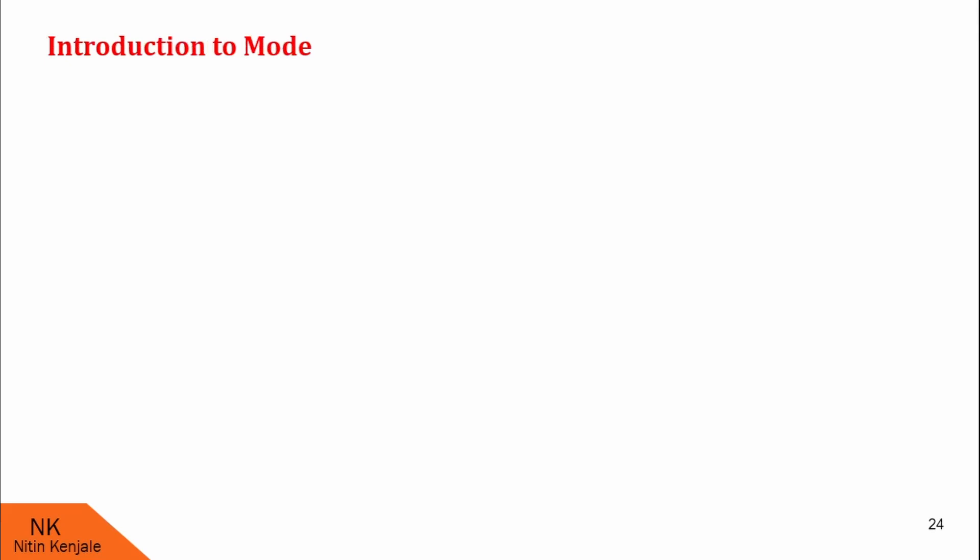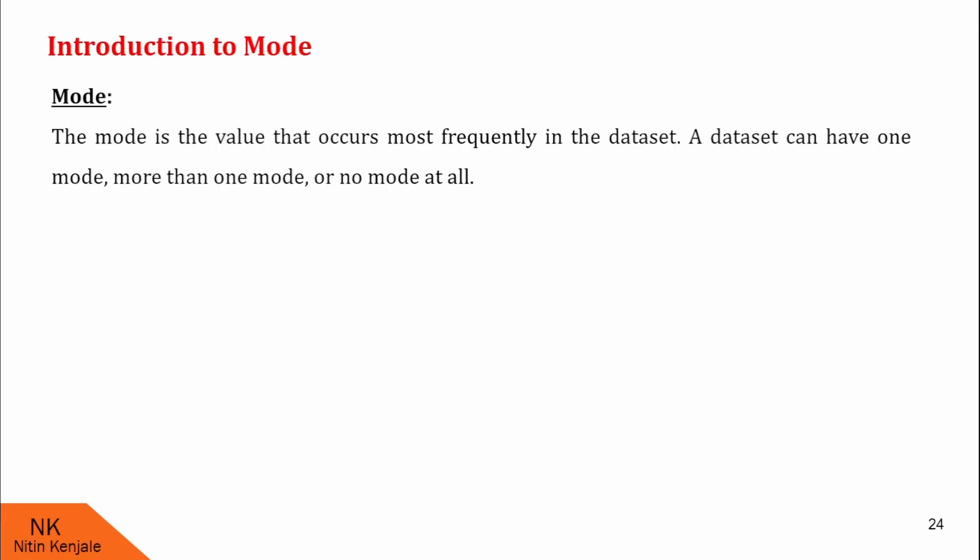Introduction to mode. The mode is the value that occurs most frequently in the dataset. A dataset can have one mode, more than one mode, or no mode at all.